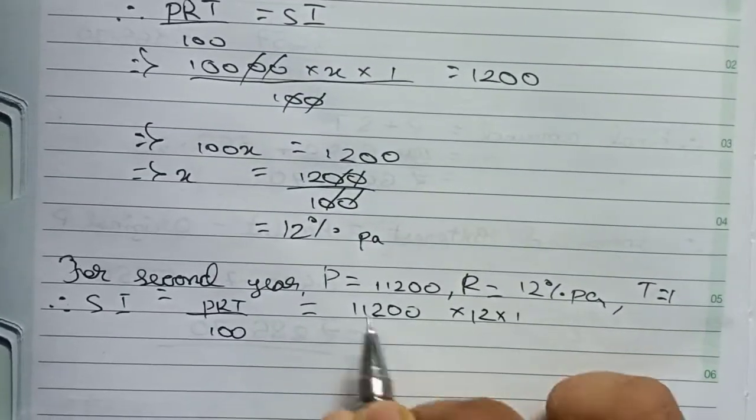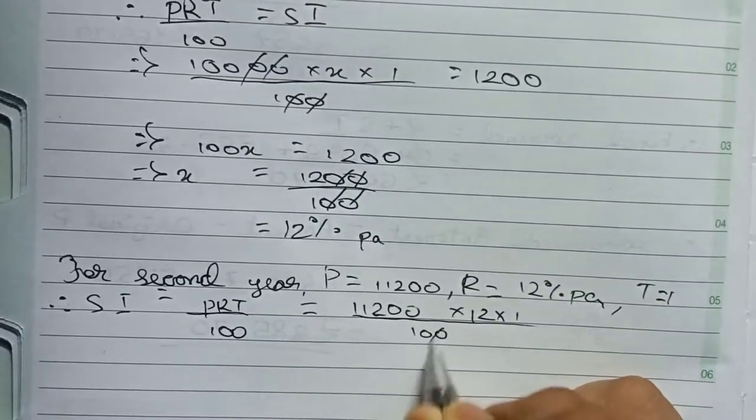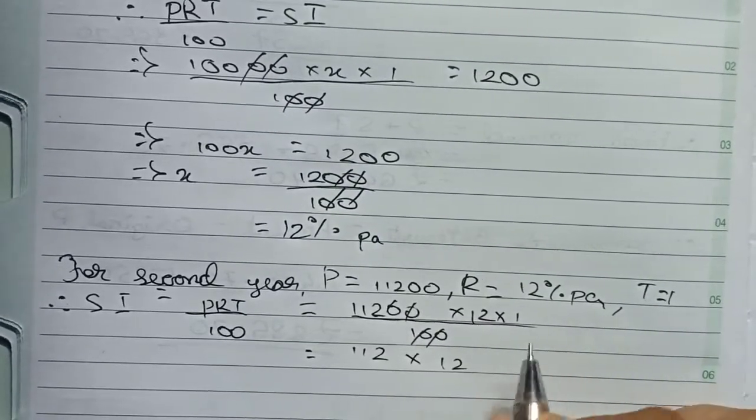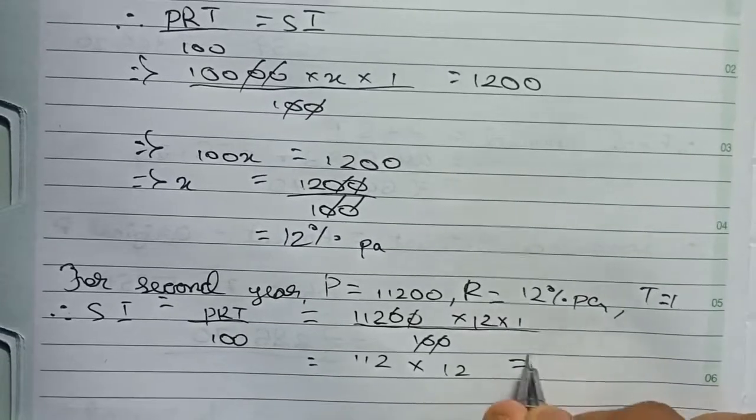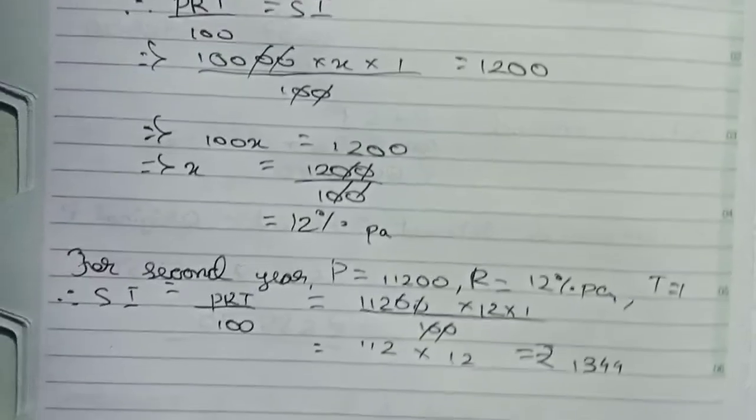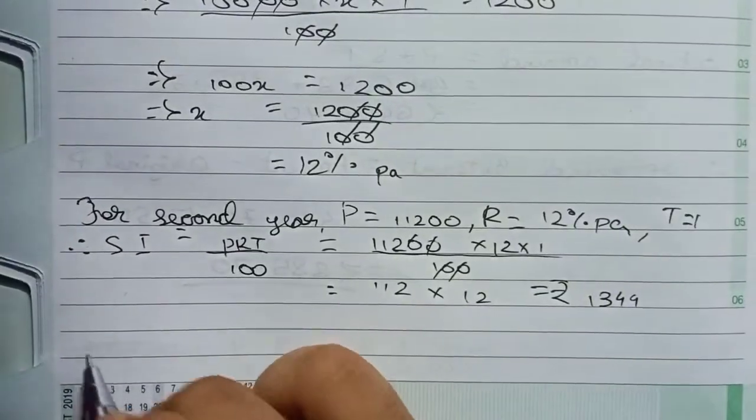First we cancel zeros, so it becomes (112 × 12)/1, which equals 1,344. With this information, I will find the amount.